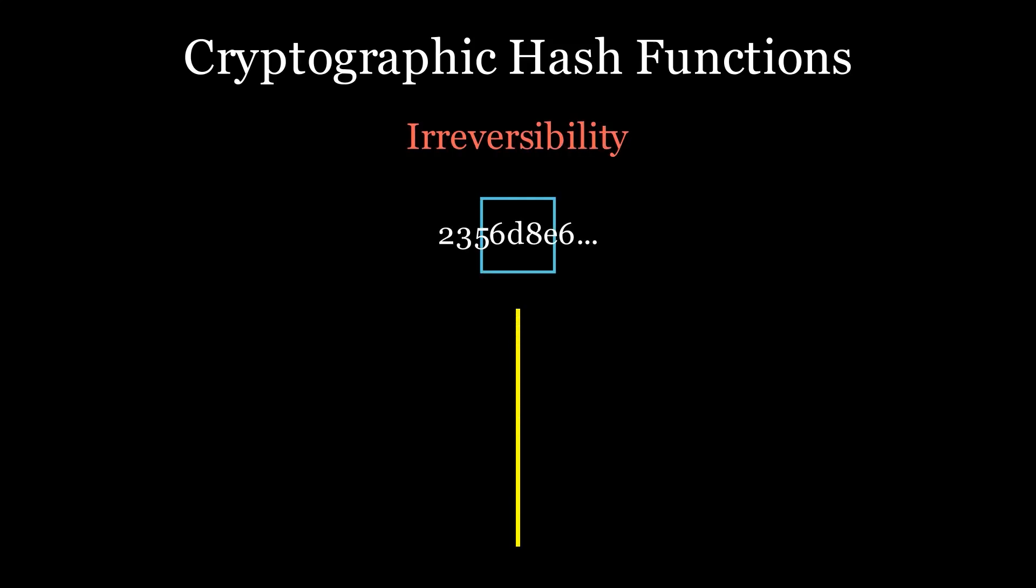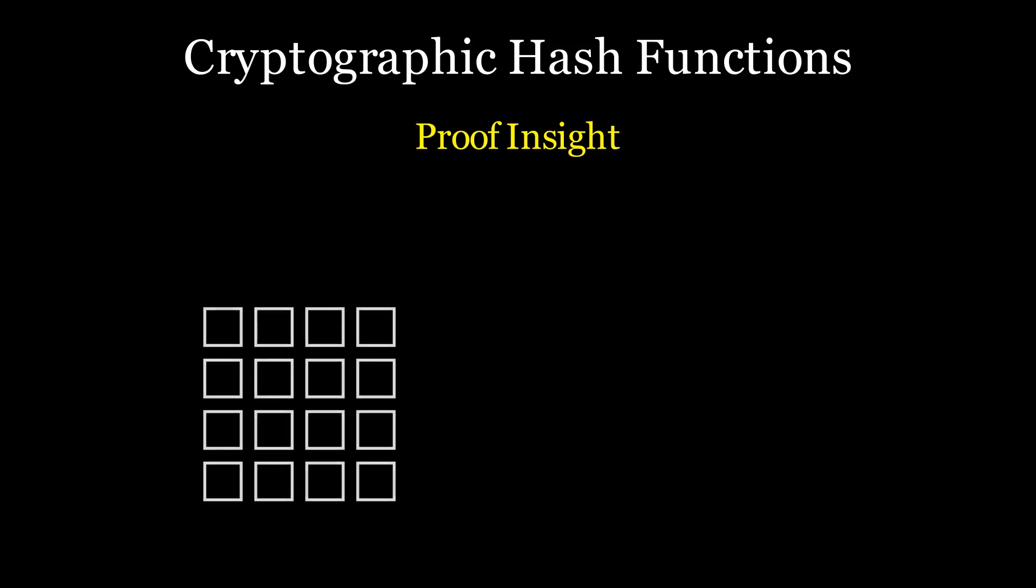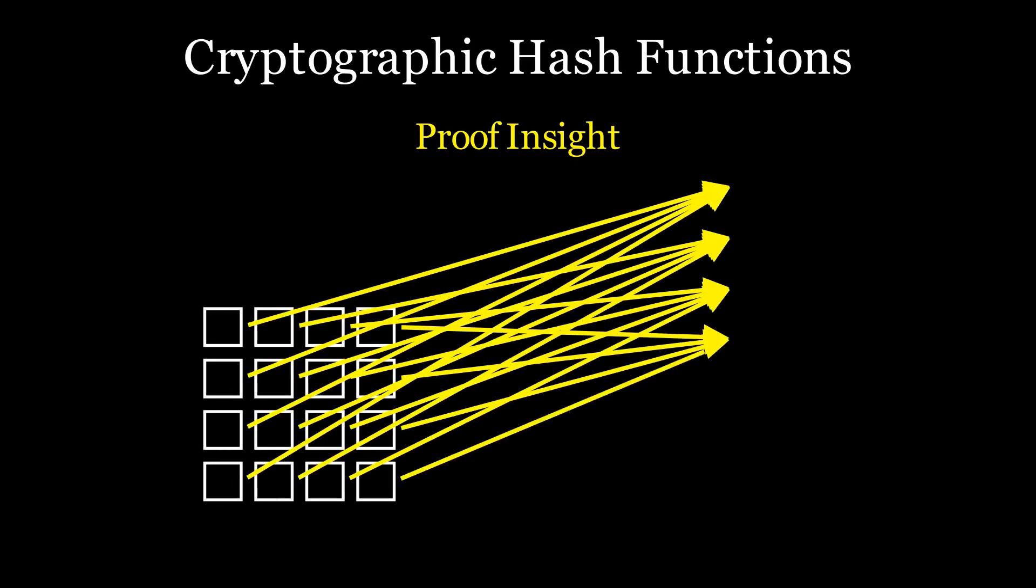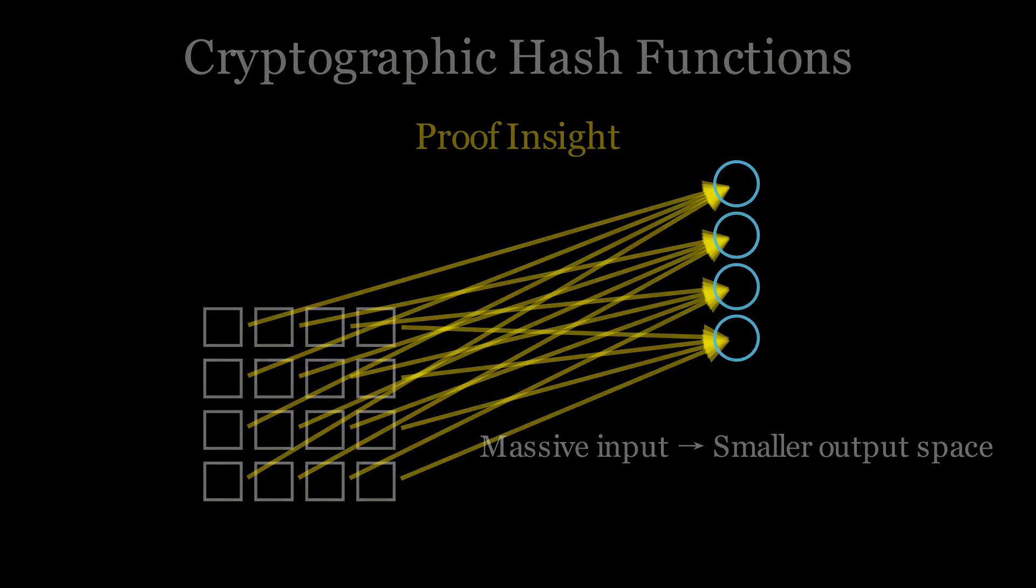To understand irreversibility, consider this. A hash function maps a massive input space to a smaller output space. By the pigeonhole principle, collisions must exist, but finding one is computationally infeasible. Claude Shannon, the father of information theory, showed how entropy ensures security in cryptographic systems.